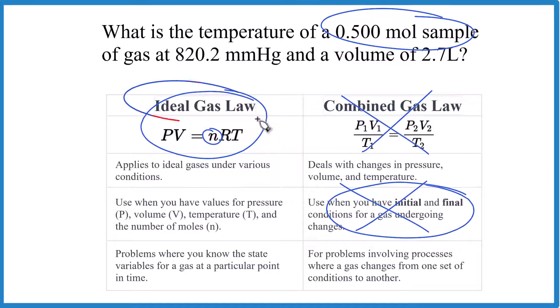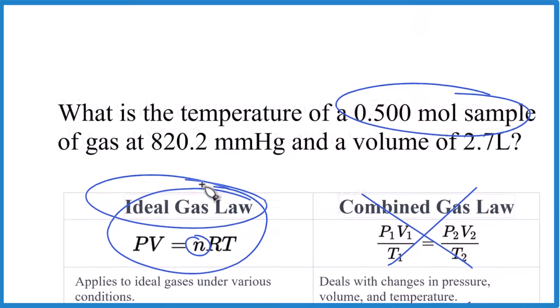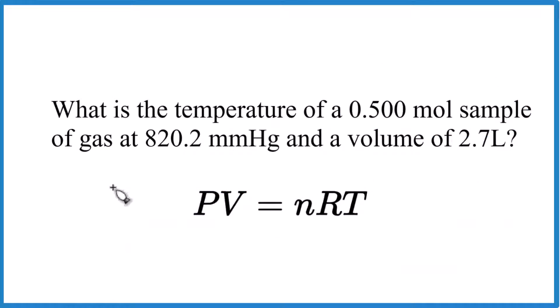For this problem we're using the ideal gas law. Let's do it. So with PV equals nRT here, the pressure is in millimeters of mercury. We have a volume, we have moles, we can look r up, that's a constant, and the temperature. We're looking for temperature, so that's the variable we're trying to find.